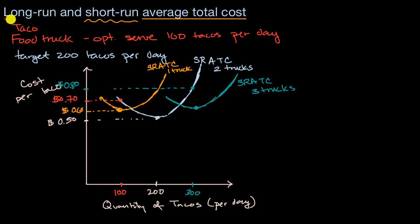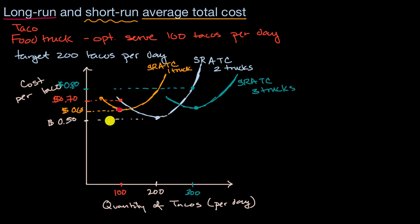Now when you look at this, it helps us think about the long-run average total cost. In the long run, we can change the number of trucks we have, and if we can, we would always be picking the optimal number of trucks for the quantity we're producing. So in the long run: if there are 100 tacos to produce, we'd use one truck; 200 tacos, two trucks; 300 tacos, three trucks.